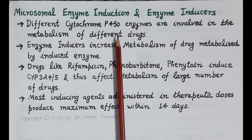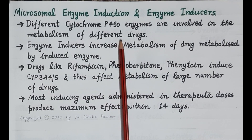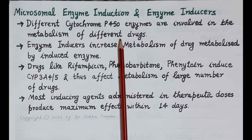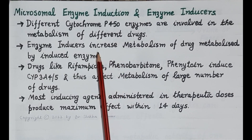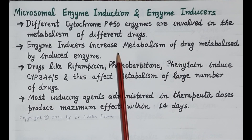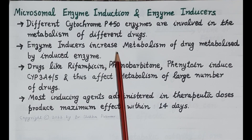It is very important to remember that different cytochrome P450 enzymes are involved in the metabolism of different drugs. For example, theophylline is metabolized by cytochrome 1A2, losartan is metabolized by cytochrome 2C9, and diazepam is metabolized by cytochrome 2C19. Enzyme inducers increase the metabolism of drugs metabolized by the induced enzyme — for example, rifampicin induces cytochrome 3A4.